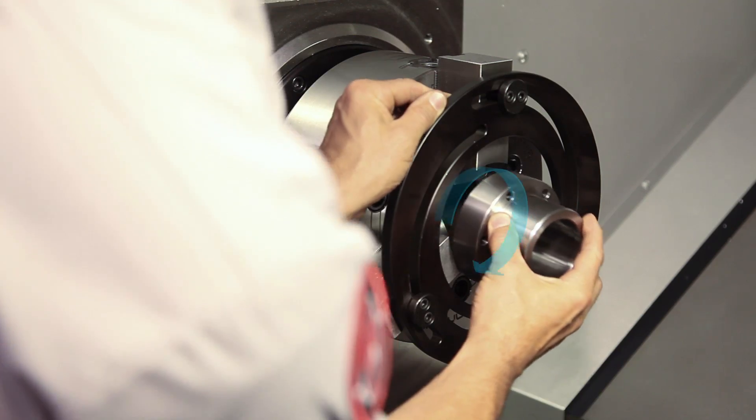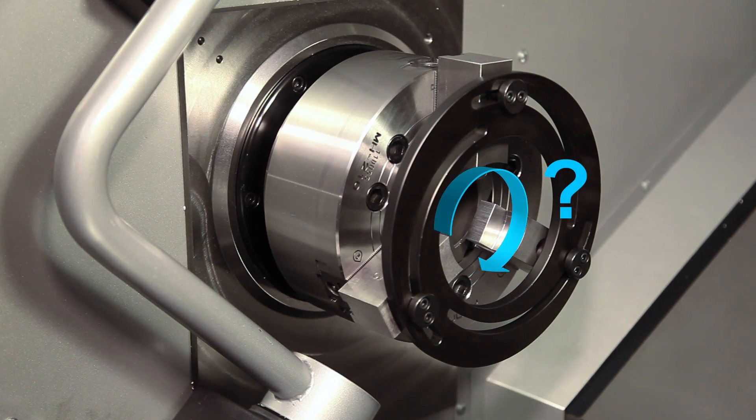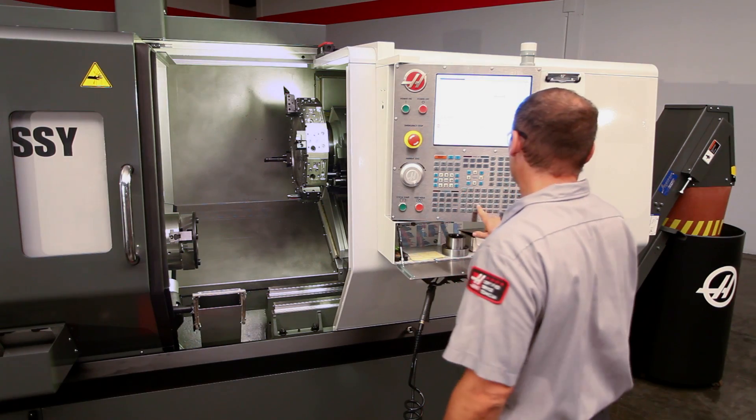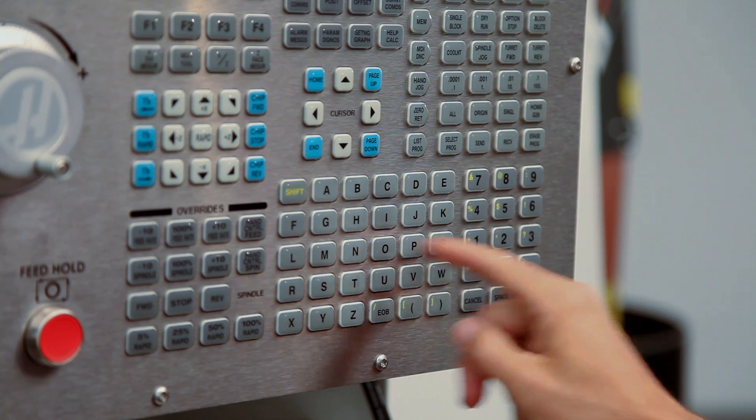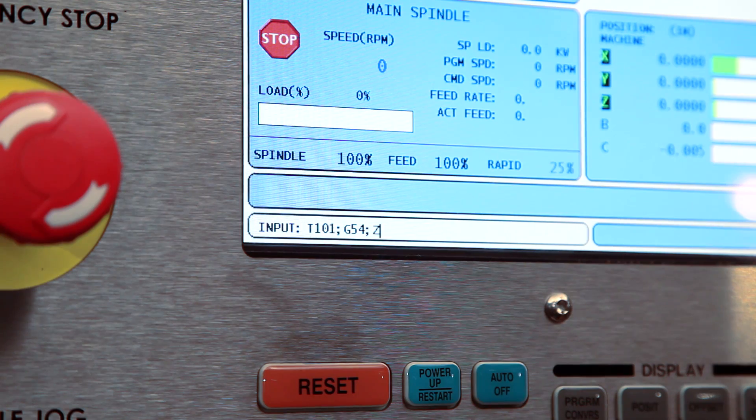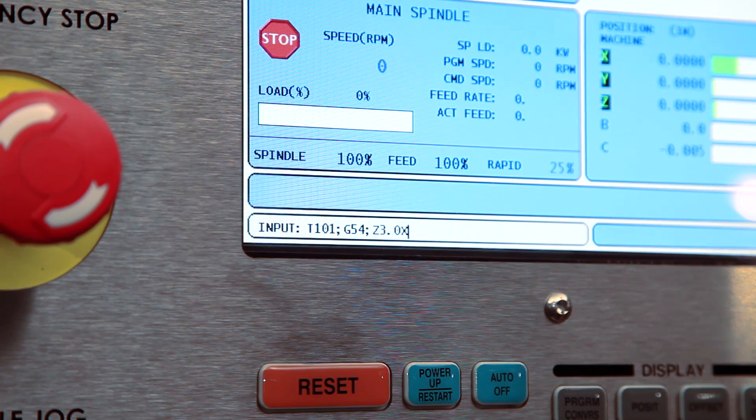We want to check what diameter the jaws are actually positioned at. To do this, we program a simple move going to X0 with the tool and offset we'll be using to re-cut the jaws.